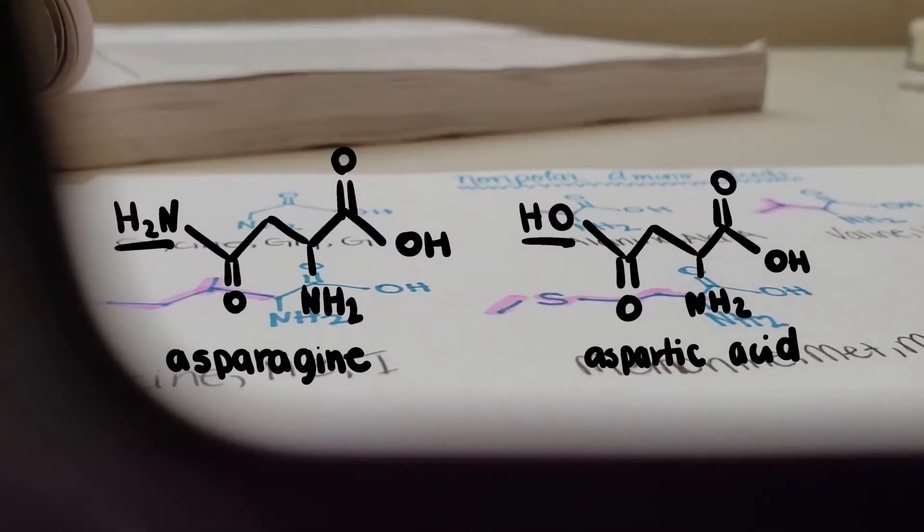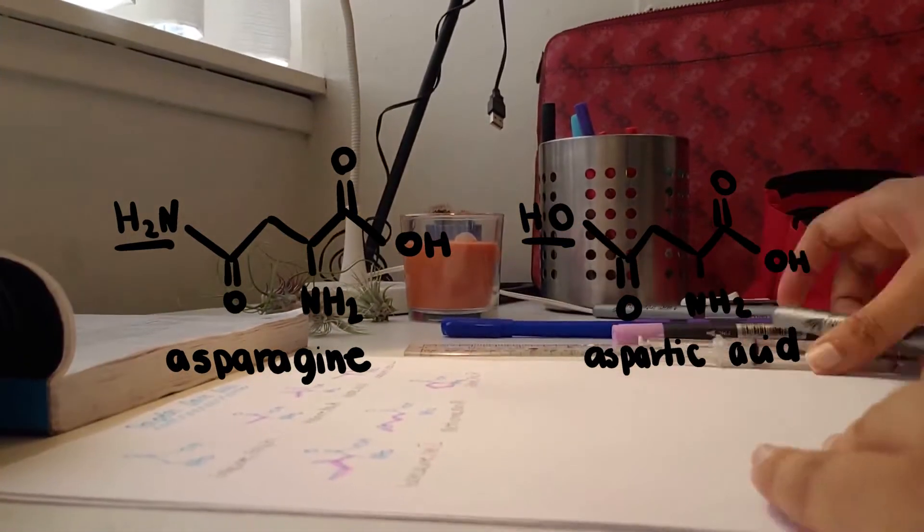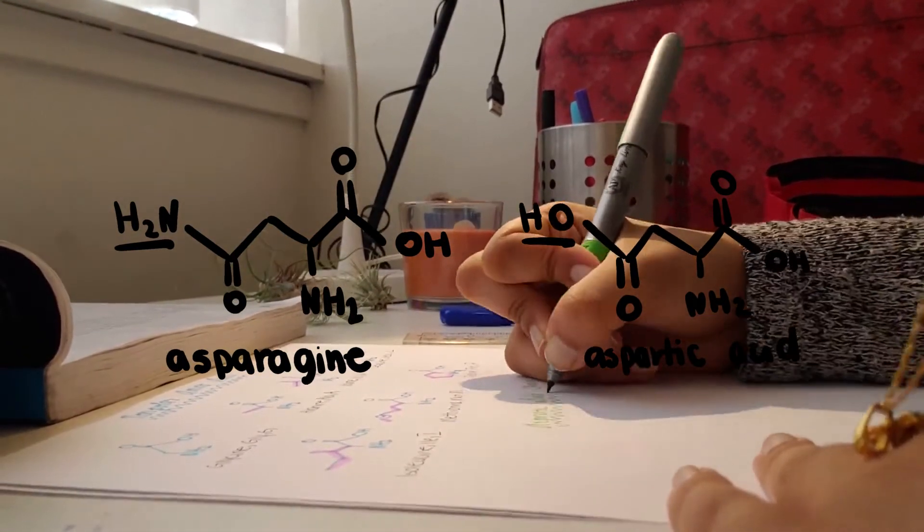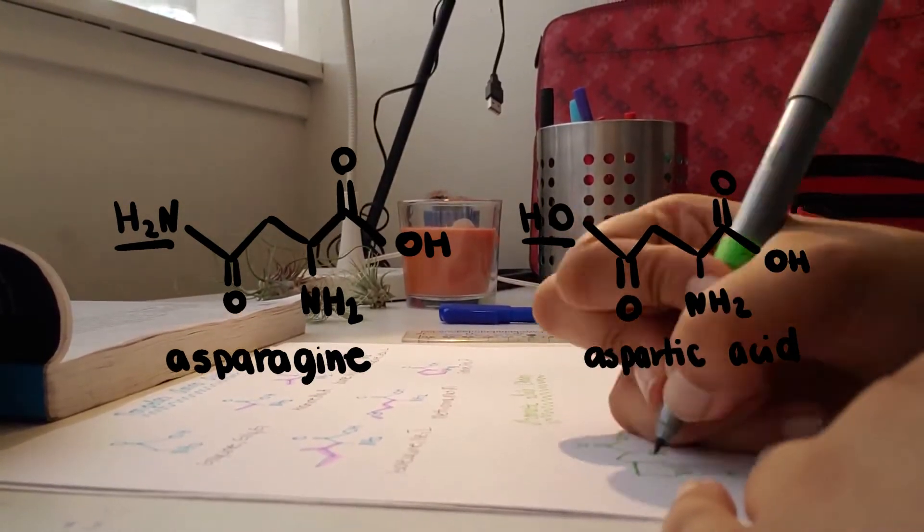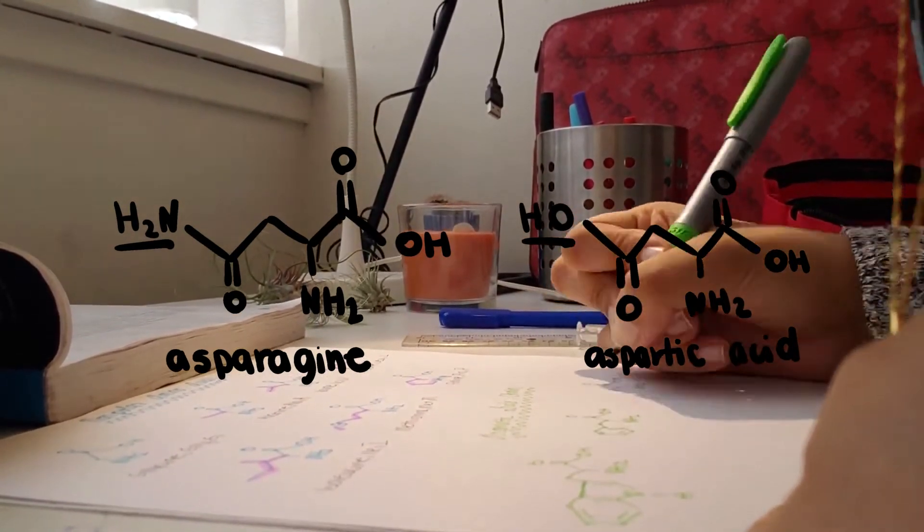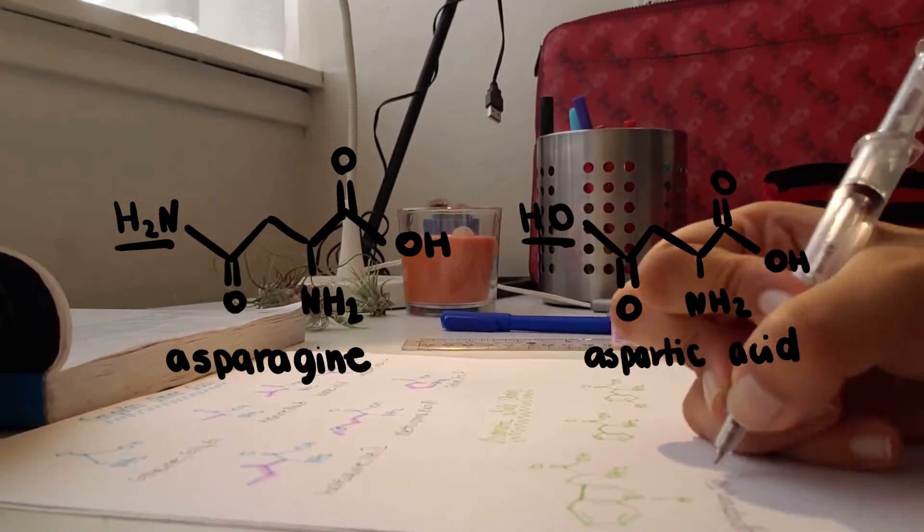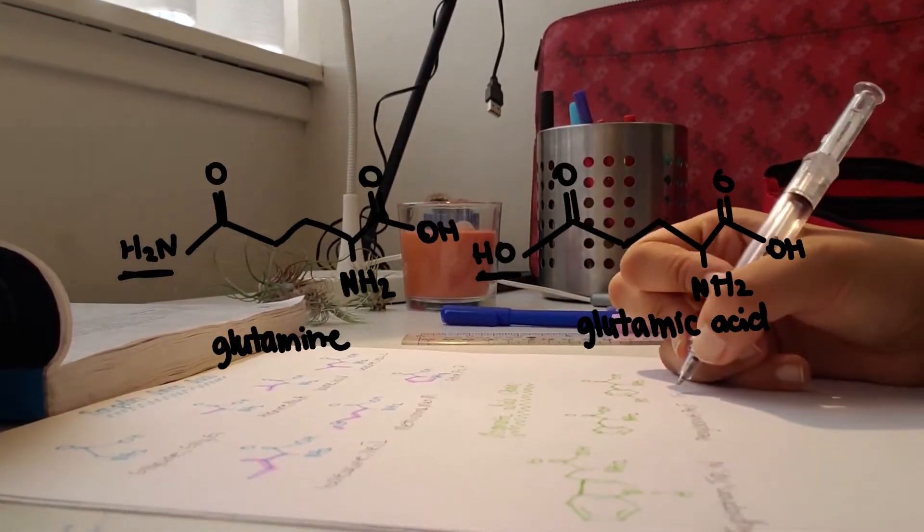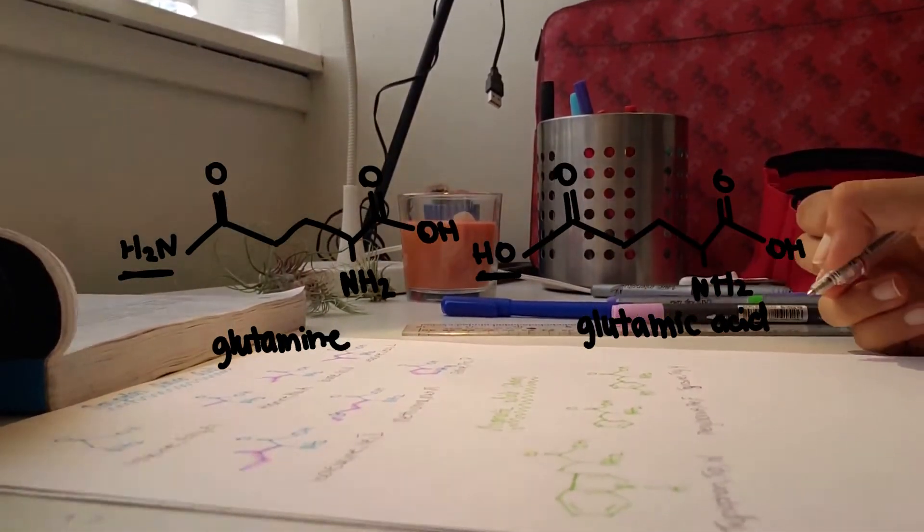Next, another pattern to note is that asparagine and aspartic acid have almost identical structures. The difference being that one has an amino group while the other has a hydroxyl group on the side chain. The same goes for glutamine and glutamic acid.